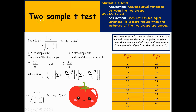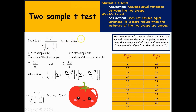The two-sample t-test is used to compare two samples in terms of their averages. There are two categories: Student's t-test, which assumes equal variances, and Welch's t-test, which does not assume equal variances and is more robust when variances of two groups are unequal. The basic formula for the two-sample t-test with equal variances uses x-bar minus y-bar, and it follows n1 plus n2 minus 2 degrees of freedom.